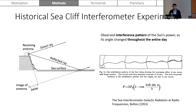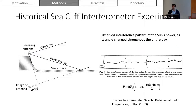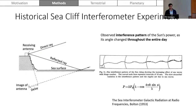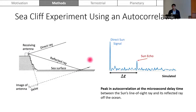Going back to the sea cliff experiment and why we thought this technique was possible: we first refer to a historical sea cliff experiment done in the 1950s by radio astronomers who observed the interference pattern of the sun's power as the sun angle changed throughout the day. Measuring the direct ray and the reflected ray and the total power received at the instrument, you see an interference pattern corresponding to fringes that map to the height of the cliff. However, this measurement takes minutes or hours. We wanted a measurement occurring on the order of seconds or microseconds, so we moved to an autocorrelation-based technique where the peak occurs at a microsecond delay time between the sun's line-of-sight ray and the reflected ray off the ocean.